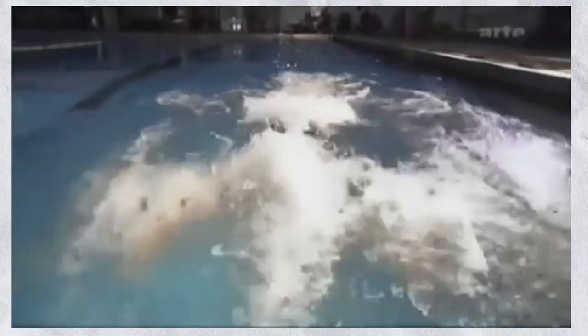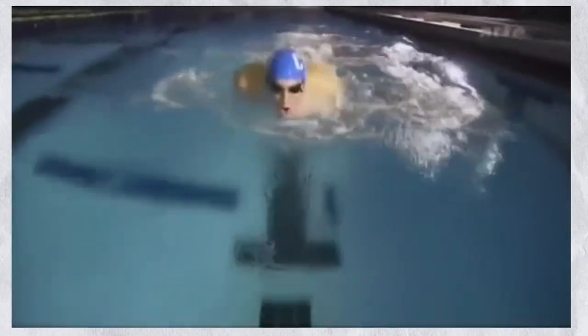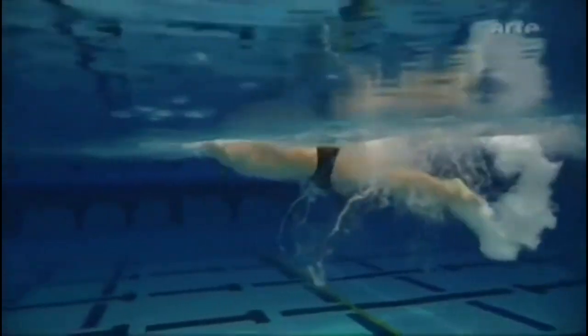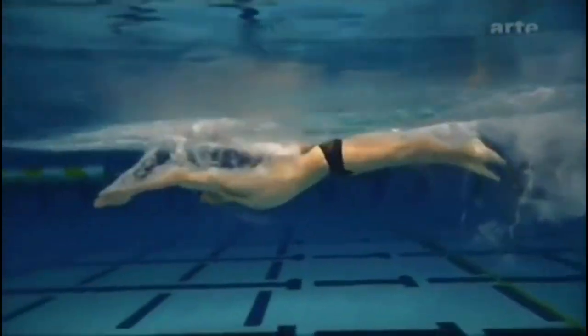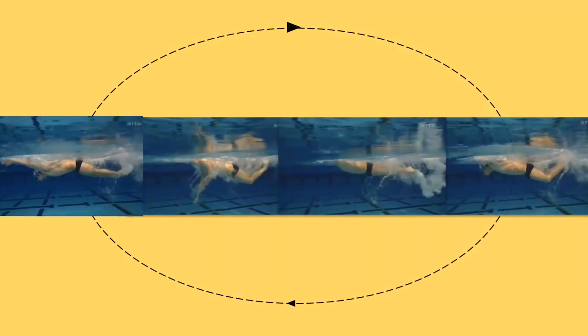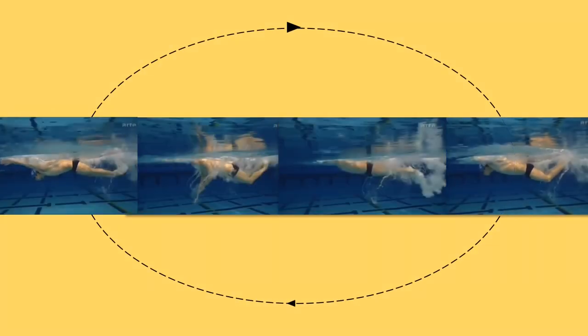How much more helpful would this clip be if we exhibited the rhythm of the stroke? The heartbeat of the entire stroke is the alternating down kick and up kick that occurs throughout the cycle. The fly rhythm is highly dependent on the dolphin kick.